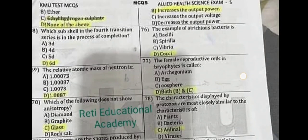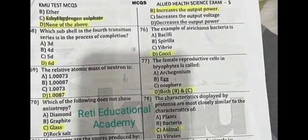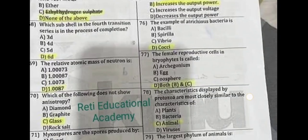Question number 68: Which subshell in the fourth transition series is in the process of completion? The correct answer is D: 6d. Question number 69: The relative atomic mass of a neutron is D. Question number 70: Which of the following does not show anisotropy? The correct answer is C: glass.